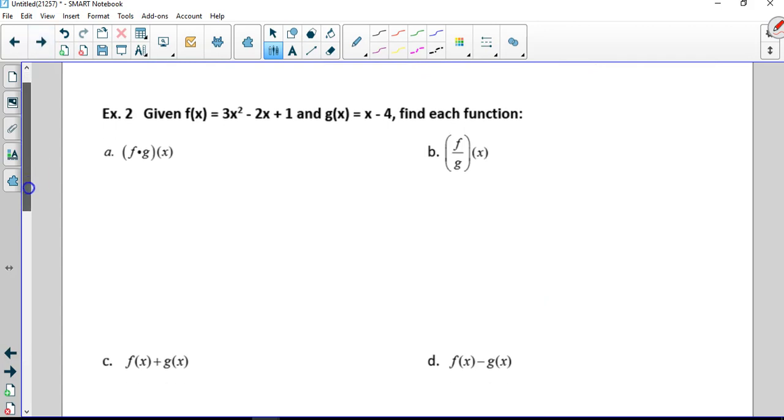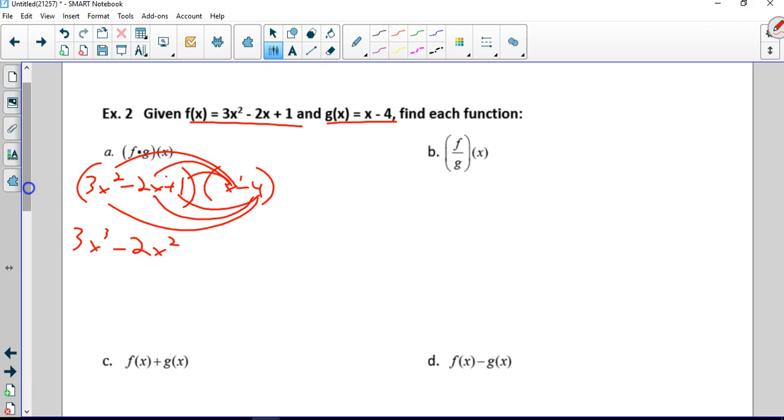Some more practice. Here's f of x, here's g of x. We're going to take f times g, so that's 3x squared minus 2x plus 1 times g of x, x minus 4. Now we're just going to take the x times each item and negative 4 times each item. So 3x squared times x is 3x cubed, minus 2x squared, plus x.